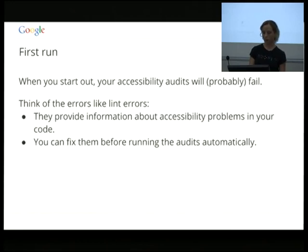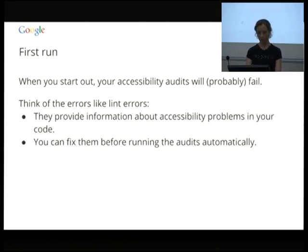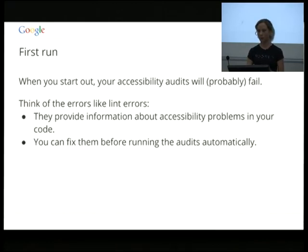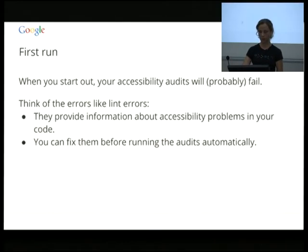Capybara Accessible takes a different approach: they run it every time the page loads and then after every single click, on the assumption that any click could actually change the state of the UI. Web Puppeteer forces you to run it in a separate test. When you first run these audits, they will almost certainly fail — especially if you've never looked at accessibility before. These errors are kind of like lint errors — they provide information about potential accessibility problems. Often it'll be a class of problems, so you can make one CSS change and fix many at once.